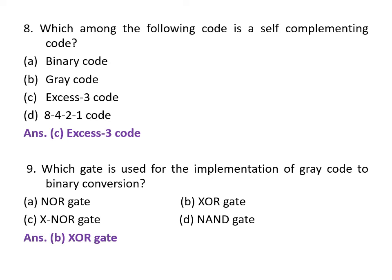9th question is: Which gate is used for the implementation of gray code to binary conversion? A. NOR gate, B. XOR gate, C. XNOR gate, D. NAND gate. And the correct answer is XOR gate. XOR gate is used for implementing gray code to binary conversion.